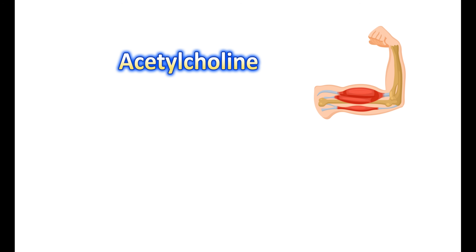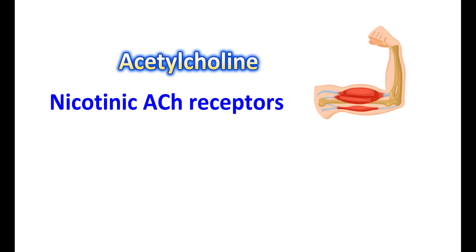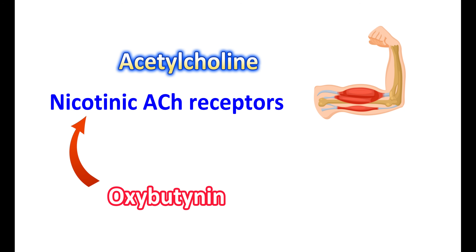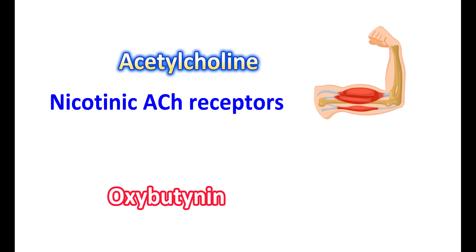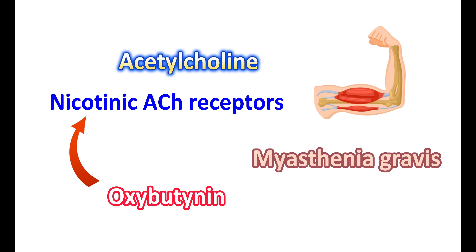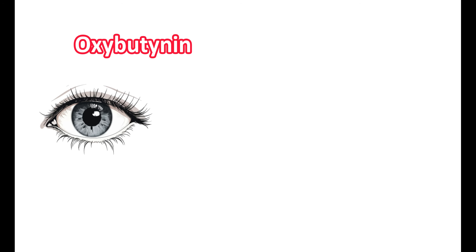Acetylcholine is required for muscle contraction and is an important neurotransmitter in the parasympathetic system, released at the neuromuscular junction to act on nicotinic acetylcholine receptors. Even though oxybutynin does not directly affect nicotinic receptors, at higher doses its selectivity may be reduced, resulting in anticholinergic effects on skeletal muscle and some muscle weakness. This side effect is generally well tolerated in normal people, but in those with a history of myasthenia gravis, muscle weakness may be significantly enhanced by use of oxybutynin.